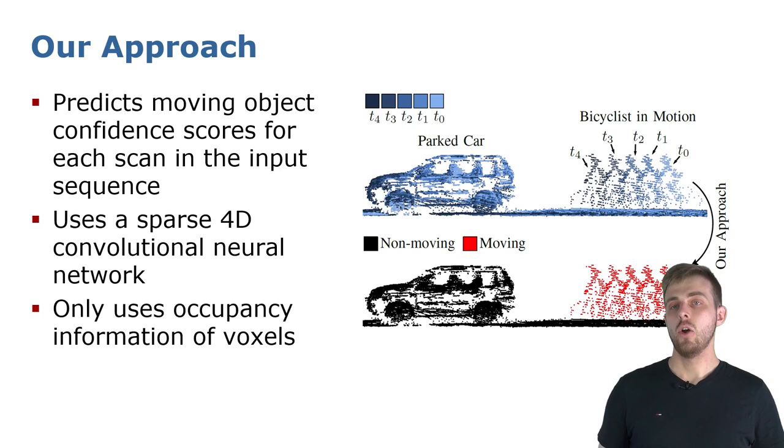We also do not use any additional information, like semantics or intensity, which makes it easier to deploy the method if the sensor setup changes.